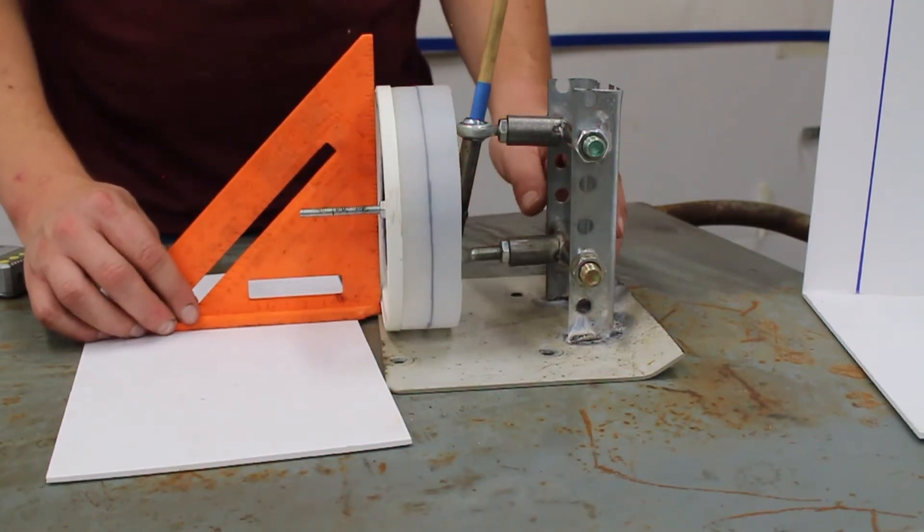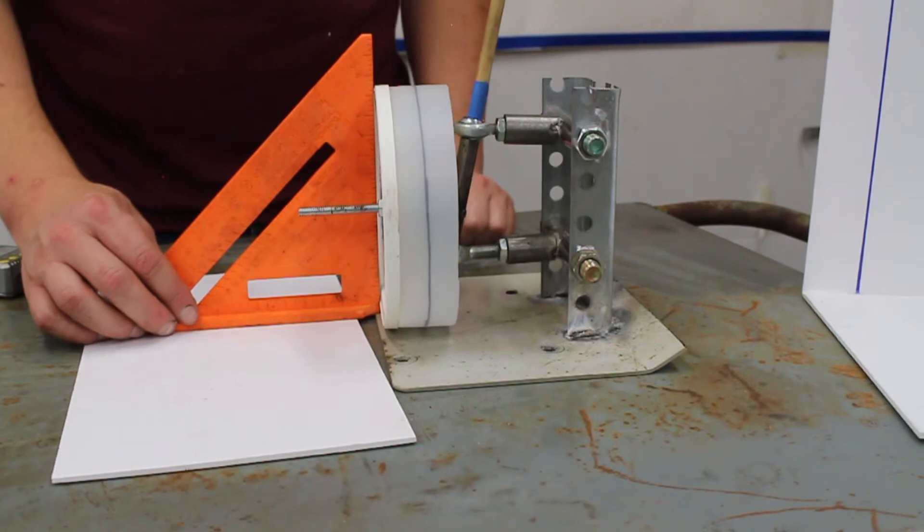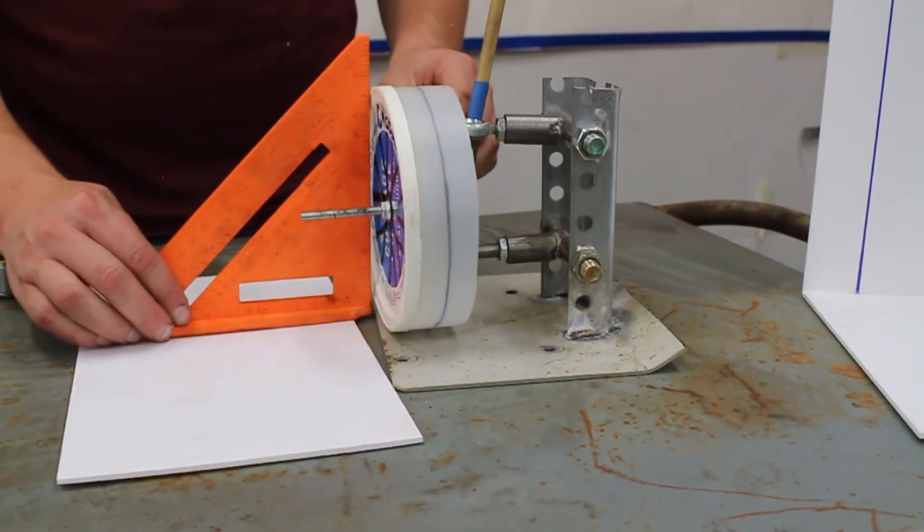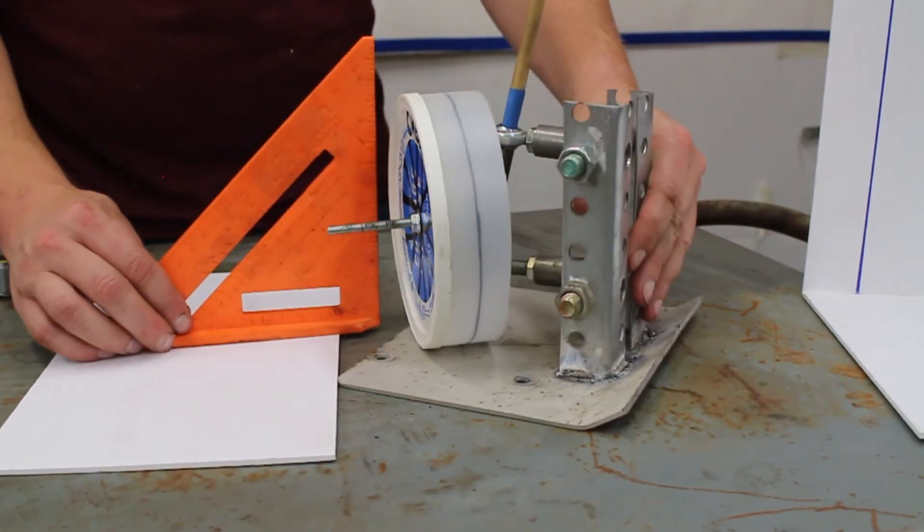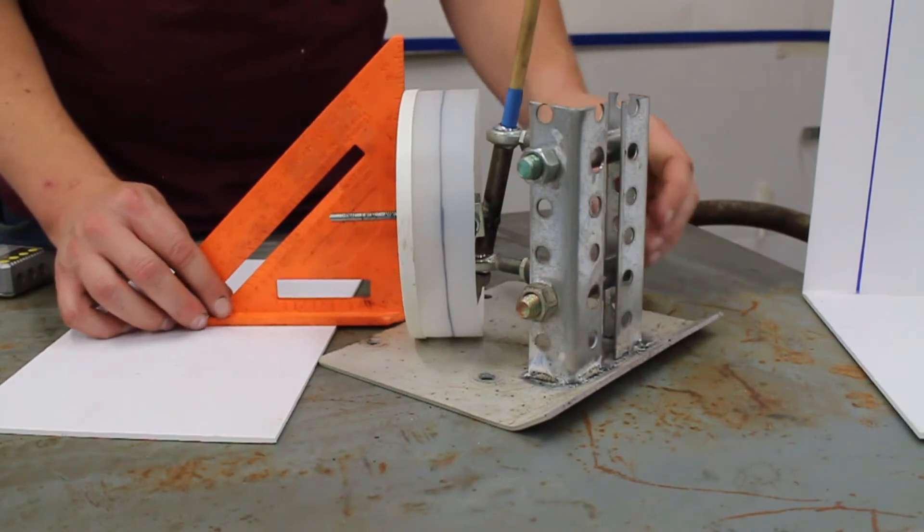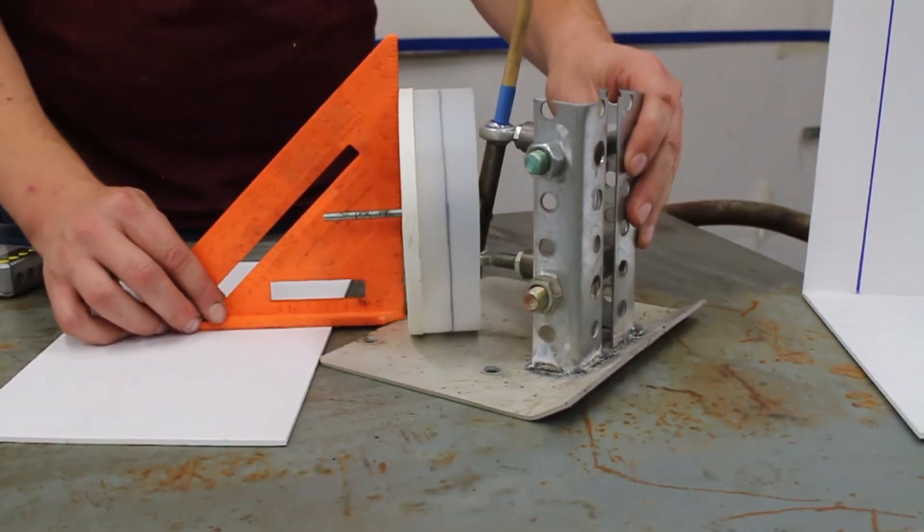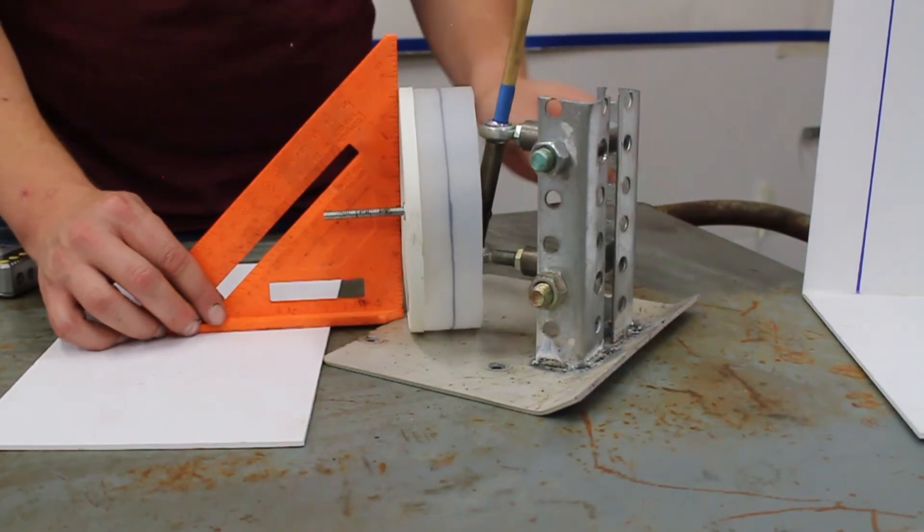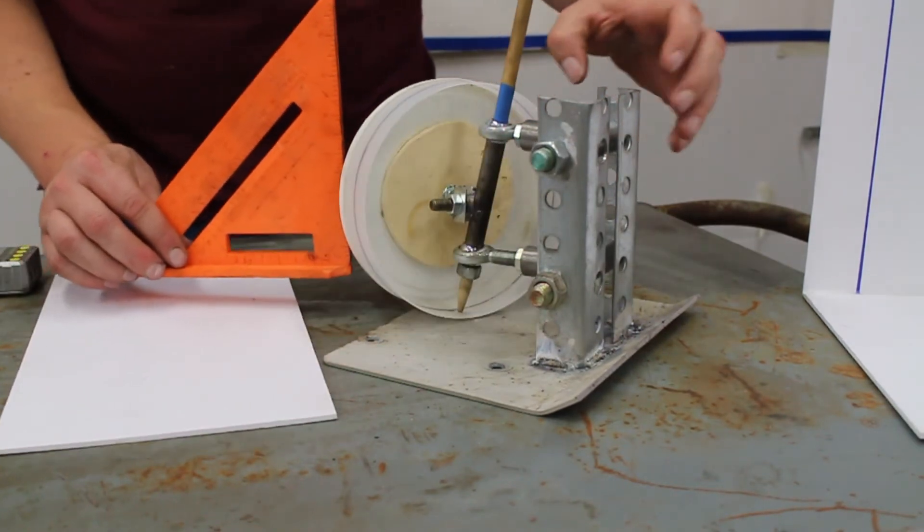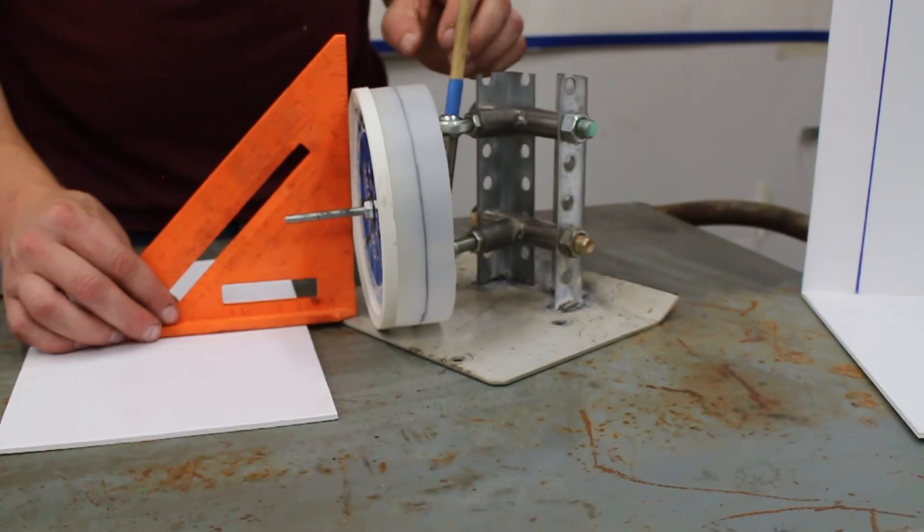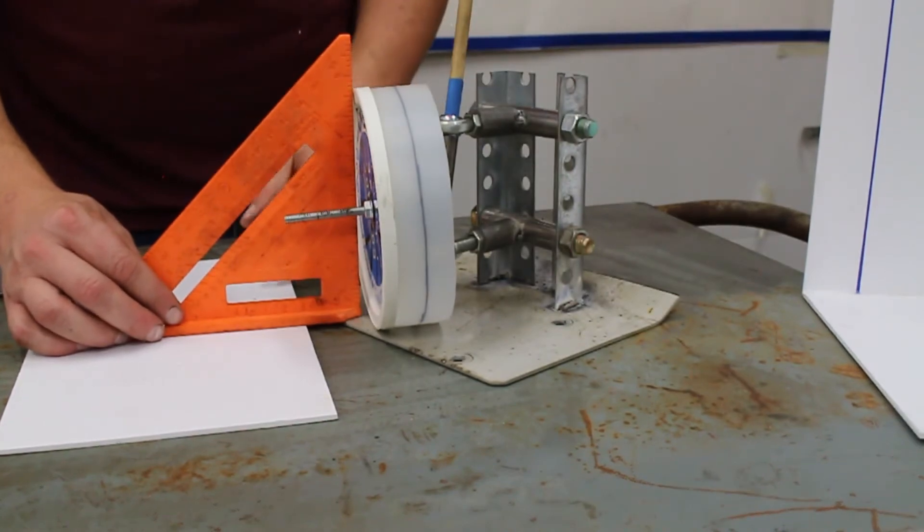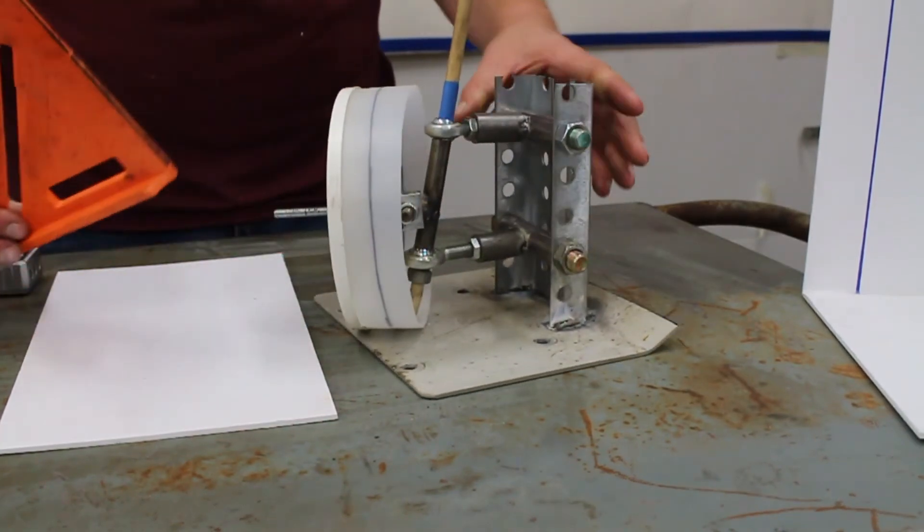As you can see here, the wheel is pretty much vertical. But as we turn it, you can see a gap generate at the bottom in both directions. So positive camber is introduced.